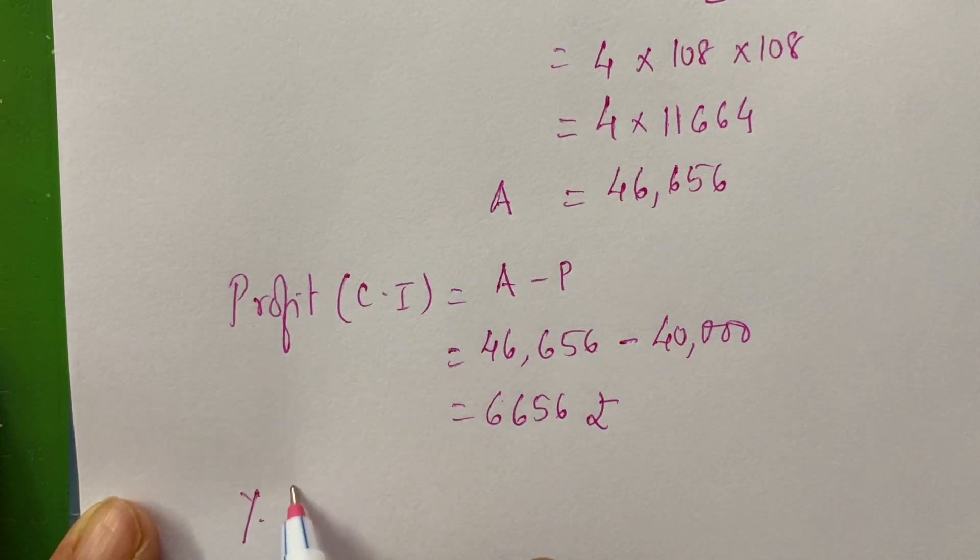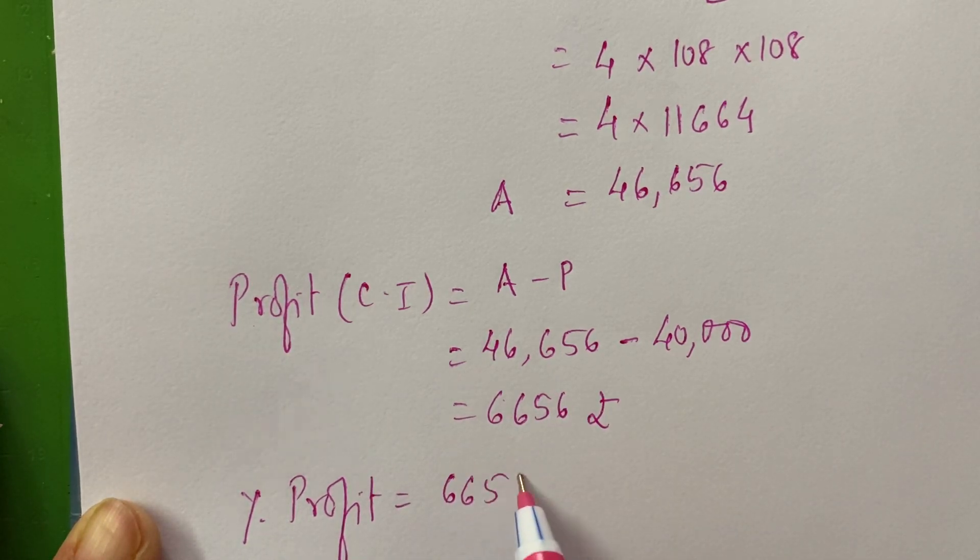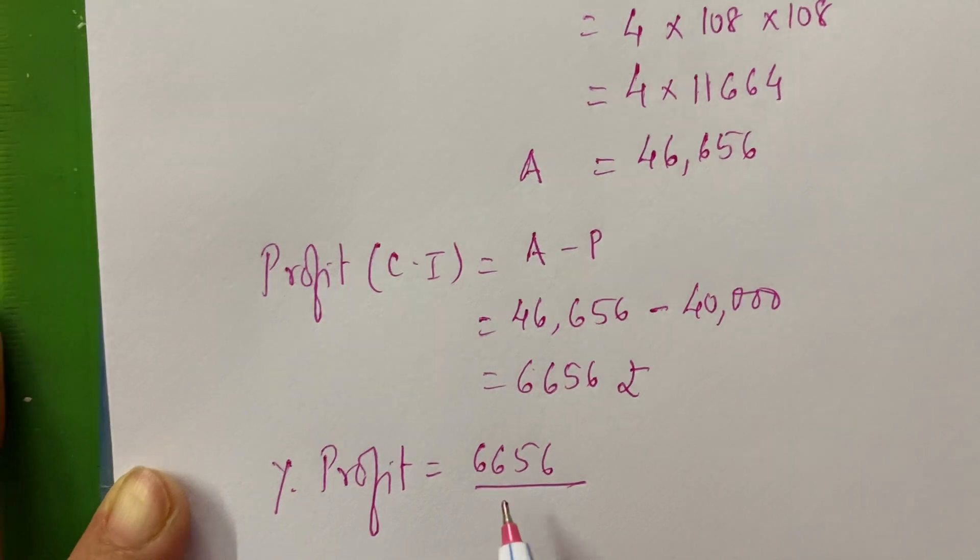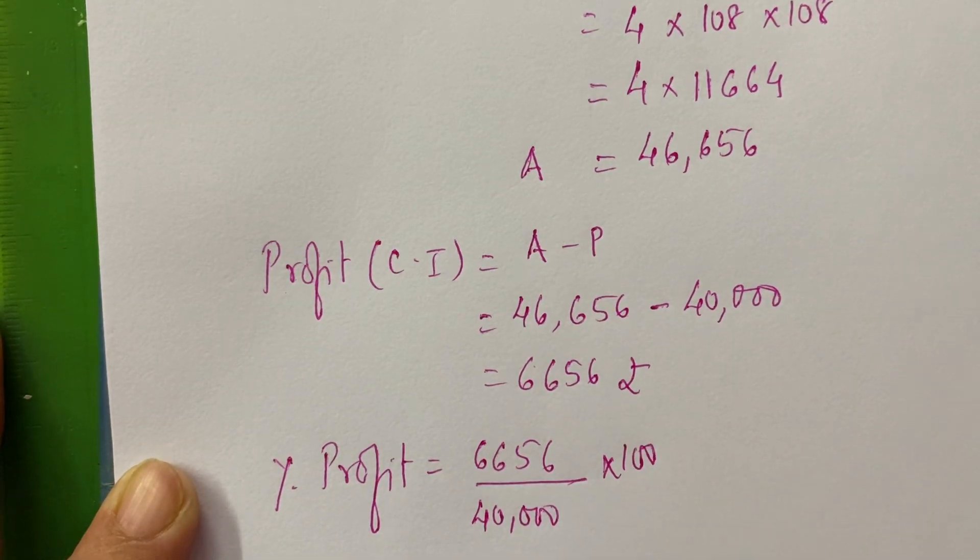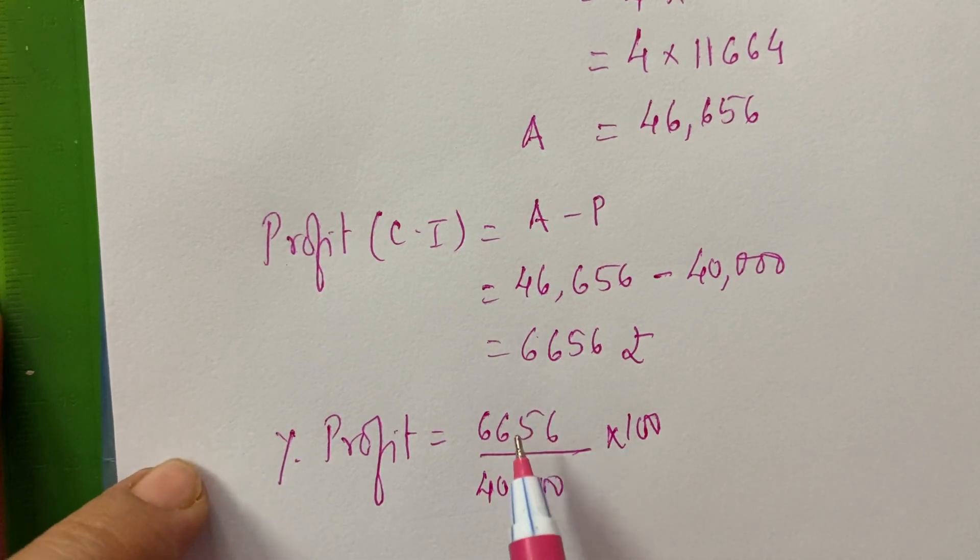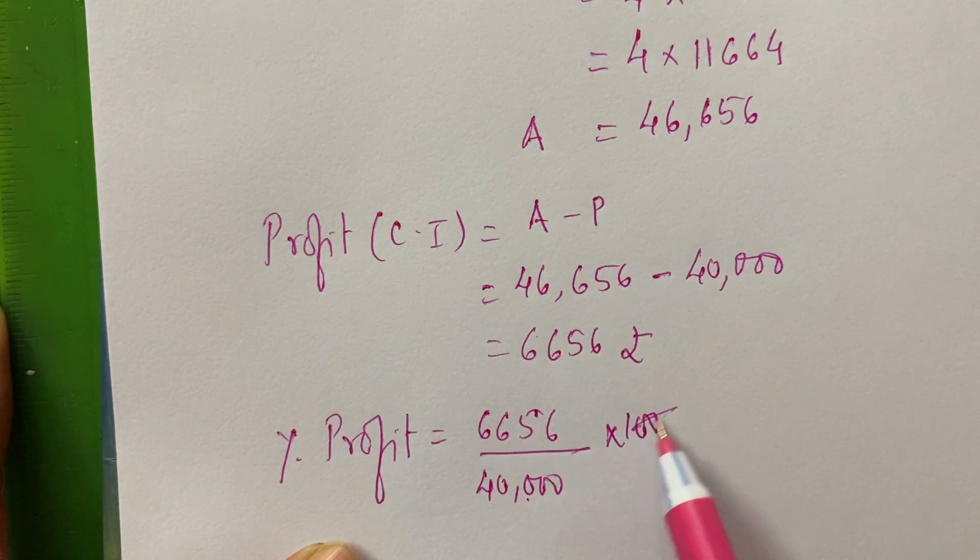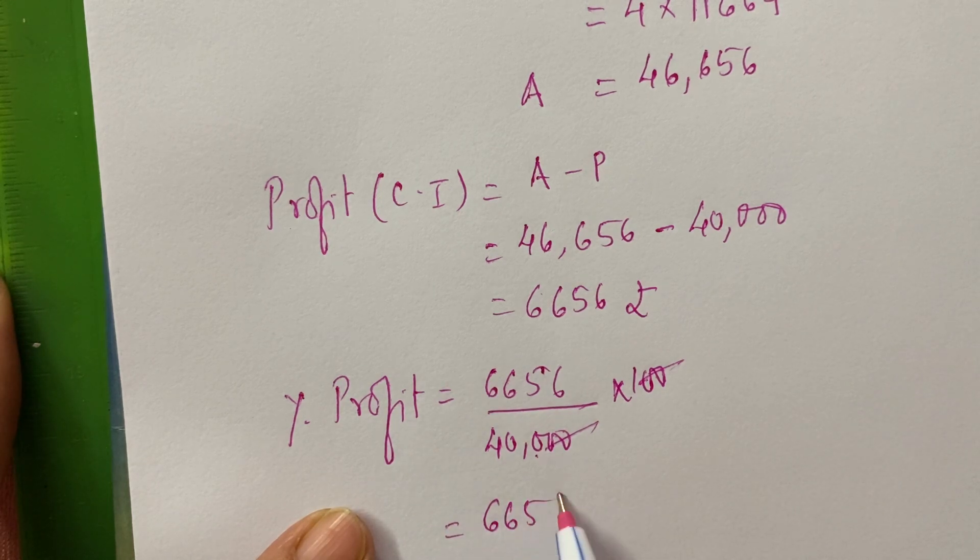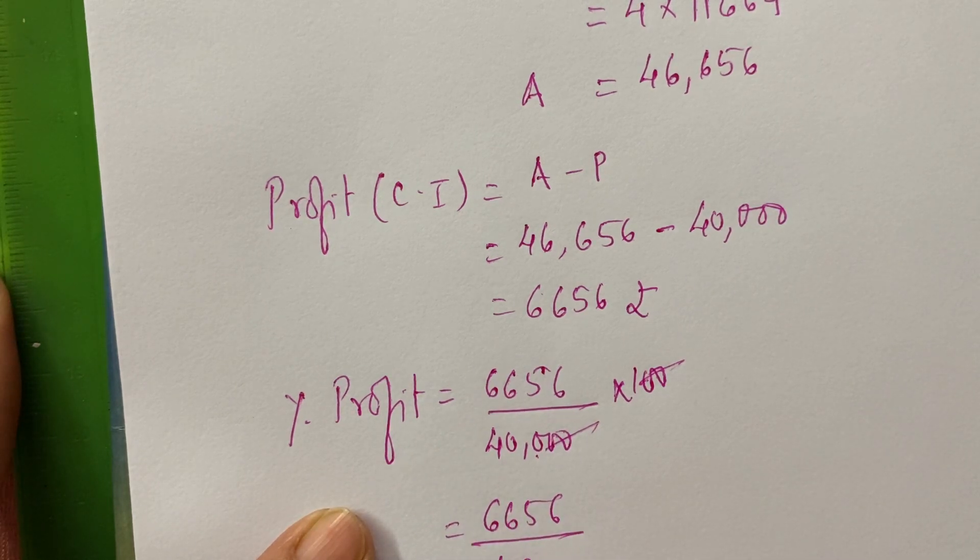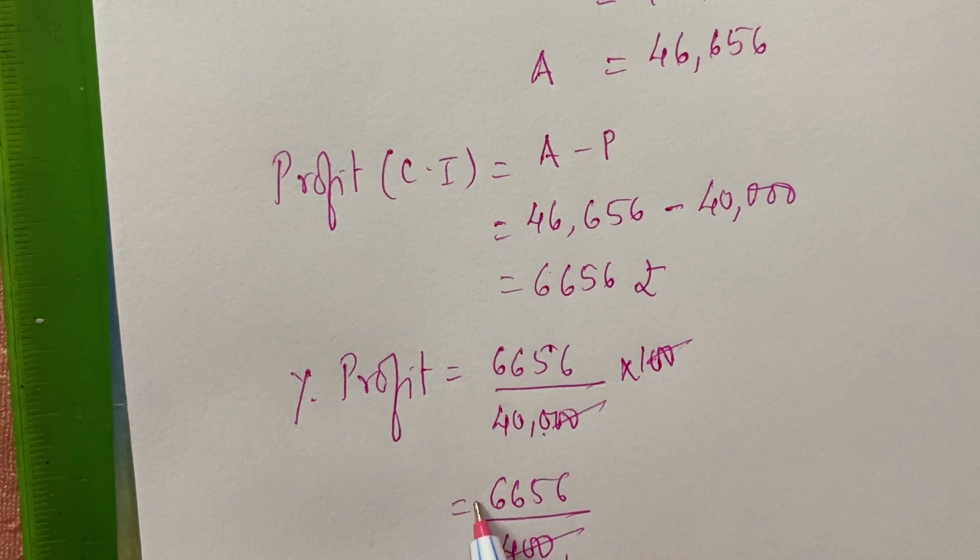Now, we will find out the percent profit. Percentage of the profit is how much? So, it will be the profit that you are earning upon the investment. How much investment you have done? 40,000 multiplied by 100. In my previous videos, I have put the formula also. That is the profit earned, the investment multiplied by 100. So, the two zeros are cancelled. You are left out with 6,656 upon 400.